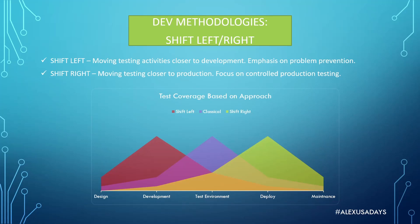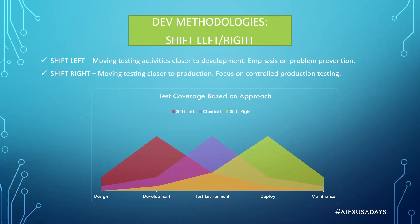Shift left is moving testing activities closer to development with an emphasis on problem prevention. Then there's shift right, which is another concept where you actually move testing closer to production, focusing on controlled production testing. You still see some tests happening in the test environment, but a lot of testing happening on deployment, after deployment in production, and during the maintenance stage. That's the core difference between shift left and shift right.